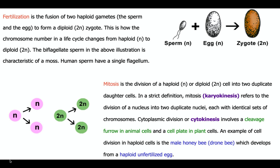Here we see a picture of sperm and egg. Both are haploid, meaning one set of chromosomes is present. The original organism produces these reproductive gametes through meiosis. The zygote is diploid again because n plus n equals 2n. The sperm comes from the father and the egg from the mother. Interestingly, most plant sperms have double flagella, while human sperm has only one flagellum.